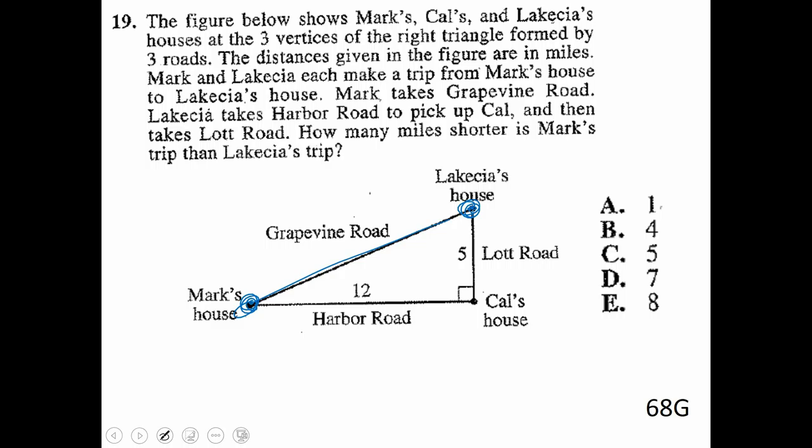So Mark's going to take Grapevine Road. So Mark goes straight down Grapevine Road here. And it says, Lakeisha takes Harbor Road to pick up Cal and then takes Lot Road. So Lakeisha goes down Harbor Road, and then she goes up Lot Road. So it says, how many miles shorter is Mark's trip than Lakeisha's trip?